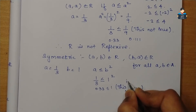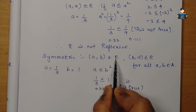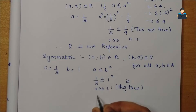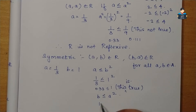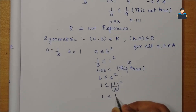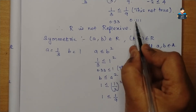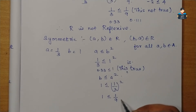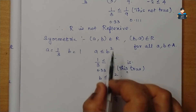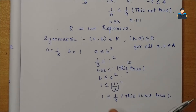Now we check whether (b,a) = (1, 1/3) ∈ R. The condition requires b ≤ a², that is 1 ≤ (1/3)² = 1/9, i.e., 1 ≤ 0.11. This is not true. So (1, 1/3) ∉ R. Therefore, R is not symmetric.